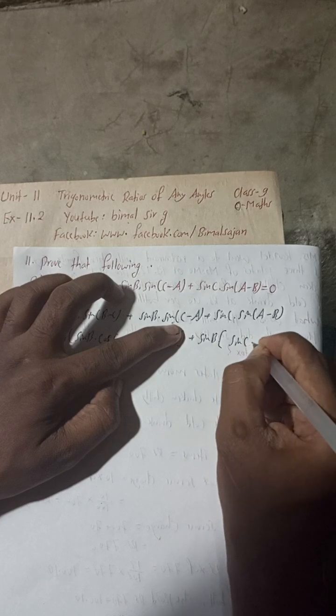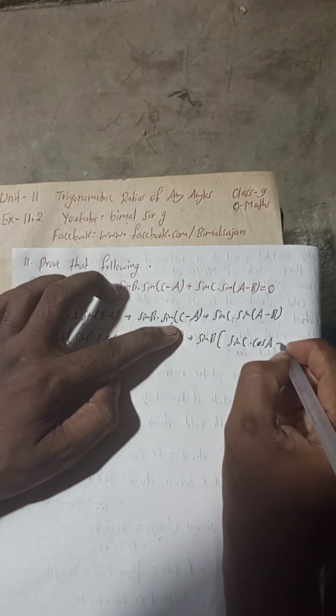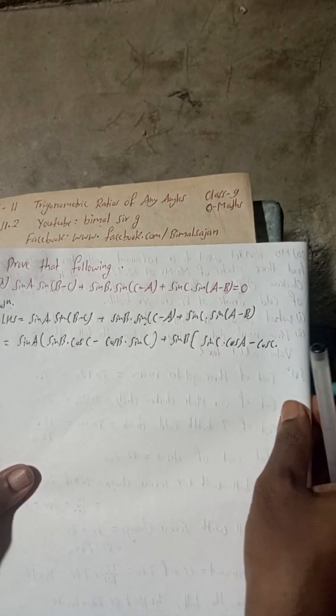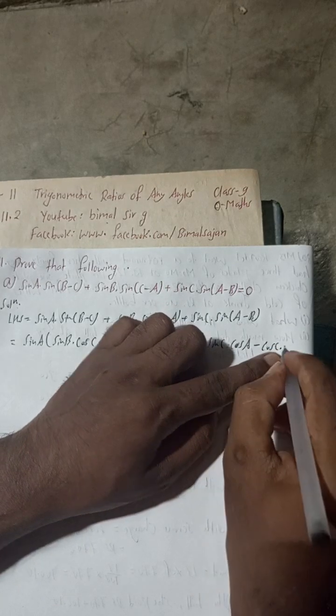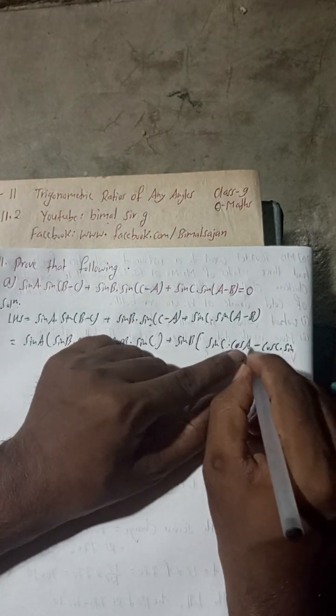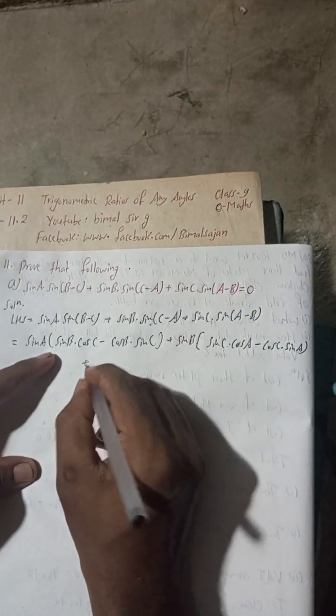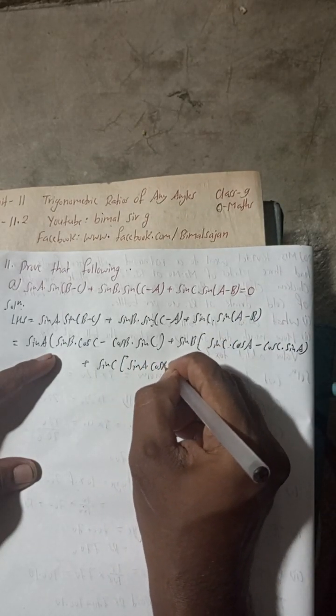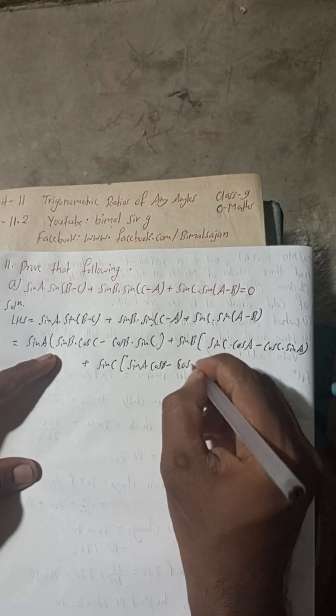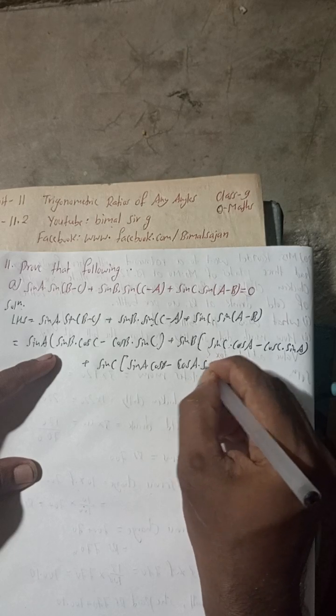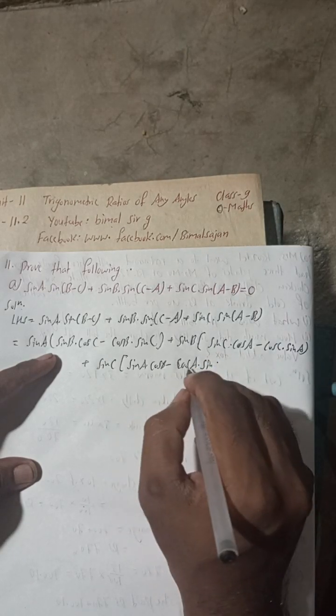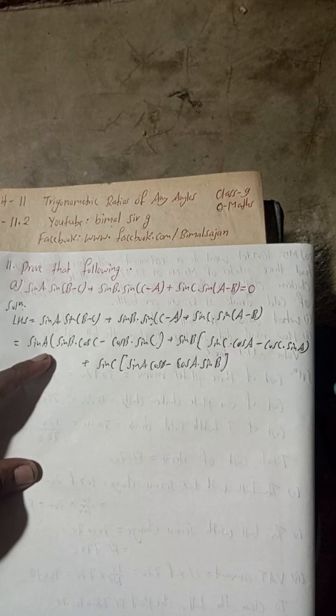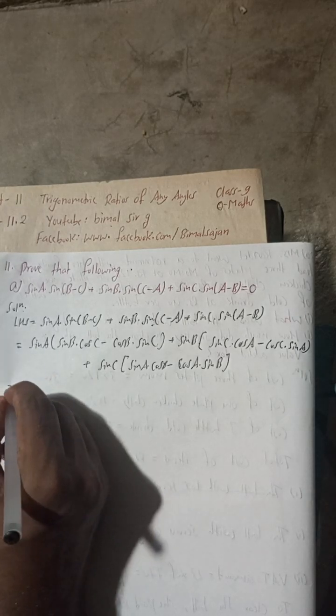Again take bracket and now apply formula for this. So sin C into cos A, this is minus, now cos C into sin A. And now this part here plus sin C and then bracket, now sin A minus B formula. So sin A cos B minus cos A sin B.